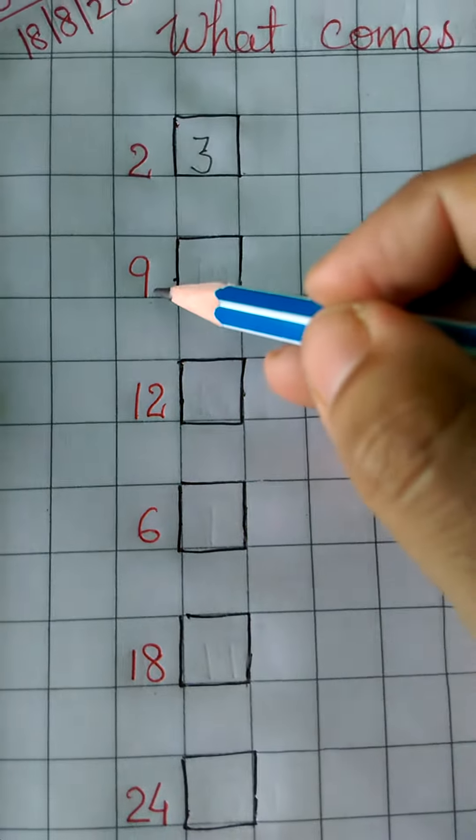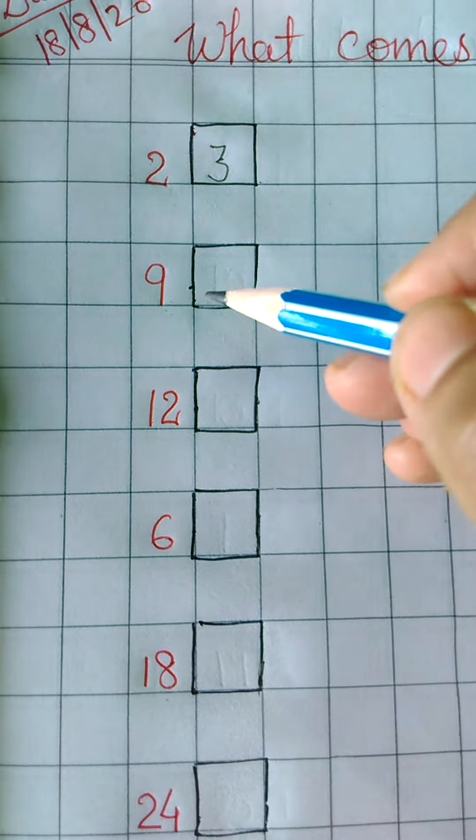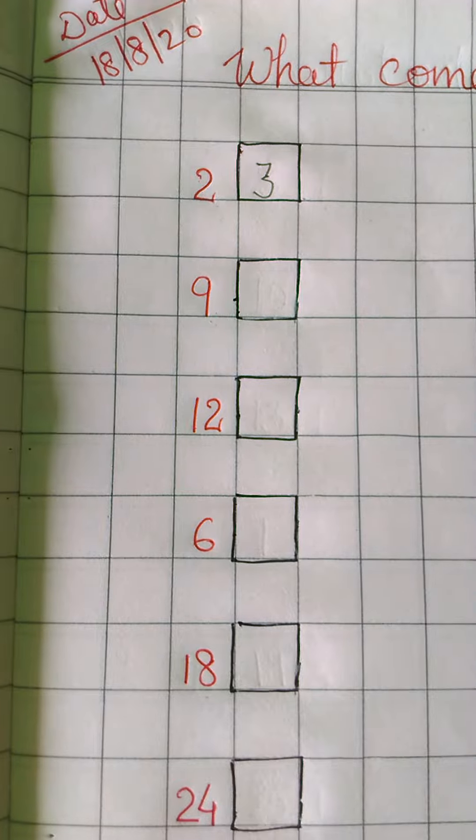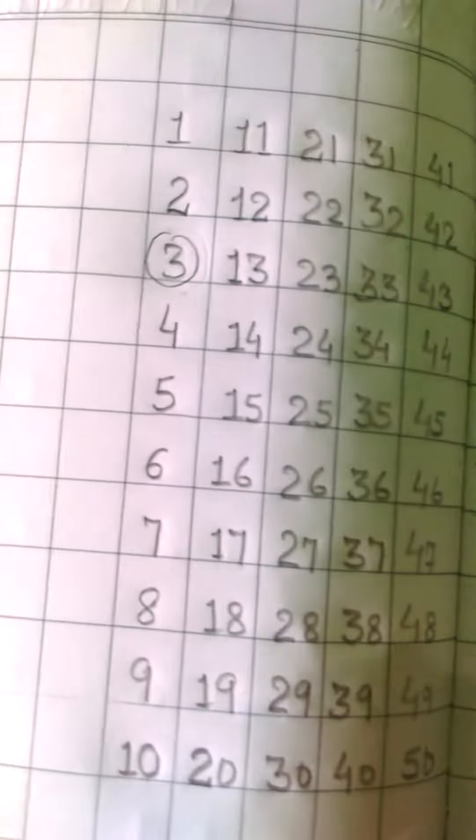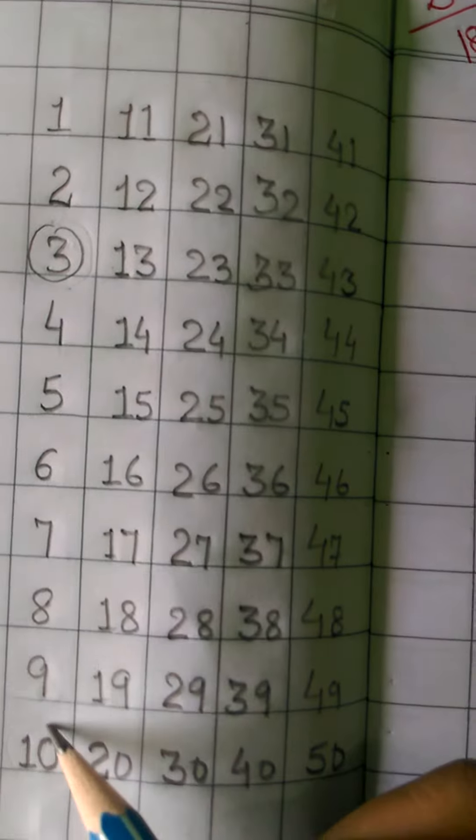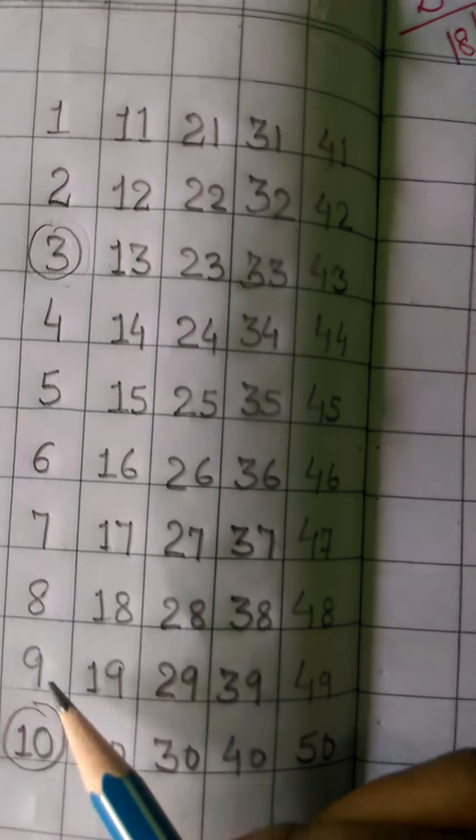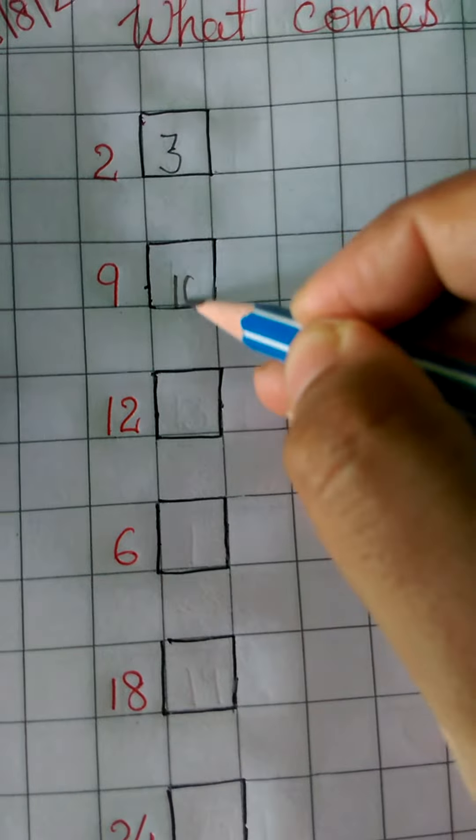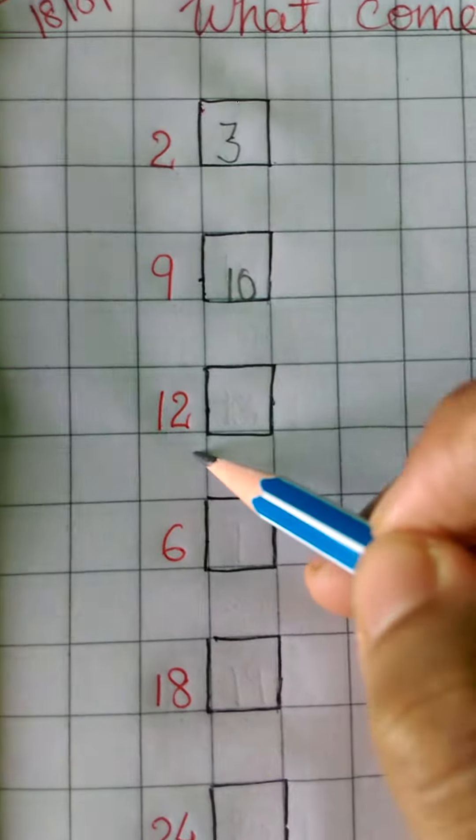Next is 9. Then again we have to recall the counting numbers and then we have to see which number comes after 9. 10. What comes after 9? 10. So in the box we have to write 10. Next is 12.